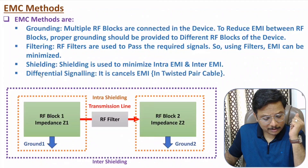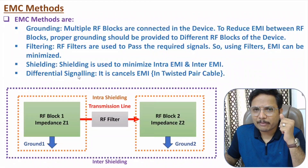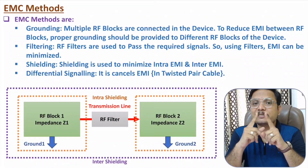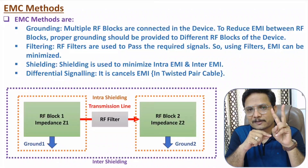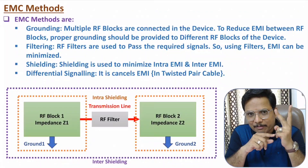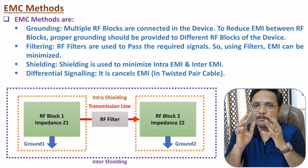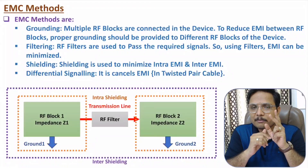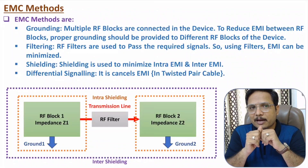The fourth method is differential signaling. Using differential signaling, we can minimize EMI. In differential signaling, we subtract two signals — by subtracting two signals, common EMI can be eliminated. This is what we do in twisted pair cables. By using differential signaling in twisted pair, we can minimize EMI.